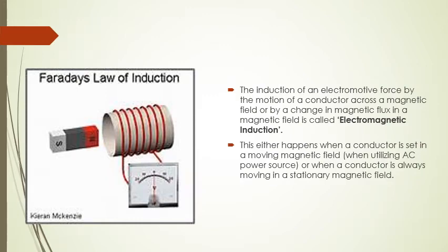The induction of an electromagnetic force occurs by the motion of a conductor across a magnetic field, or by a changing magnetic field. This is called electromagnetic induction. It either happens when a conductor is set to move in a magnetic field, when utilizing an AC power source, or when a conductor moves in a stationary magnetic field. We consider both the motion of magnets and the motion of the conductor.